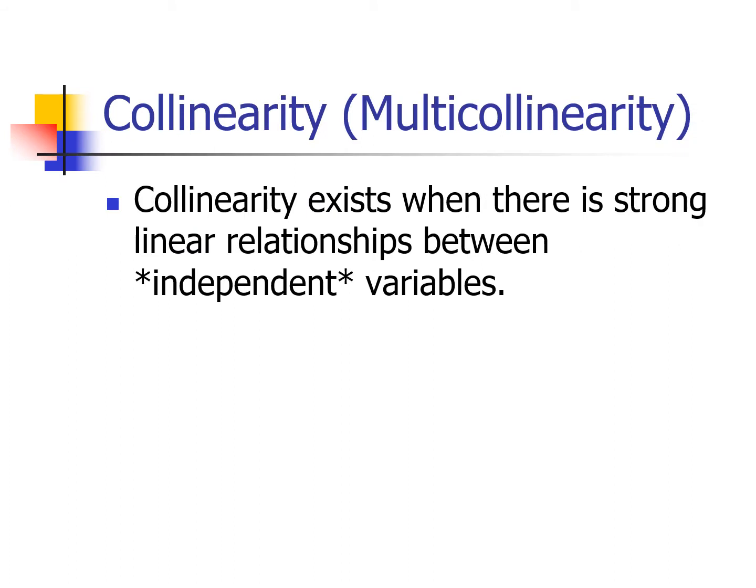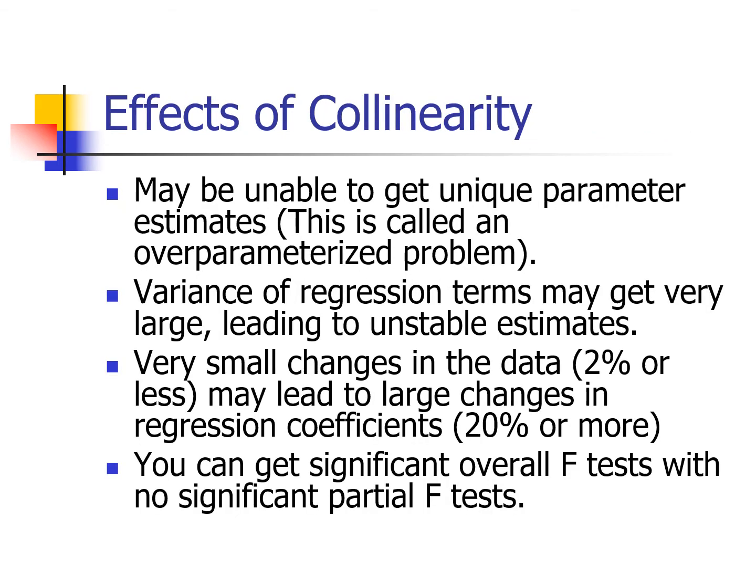So what is collinearity? Collinearity exists when there is a strong linear relationship between the independent variables — that is, when the X variables are functions of one another. We care about collinearity because in its presence we might be unable to get unique parameter estimates. This is called an over-parameterization problem.